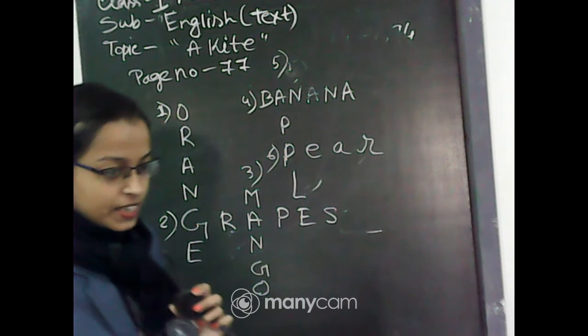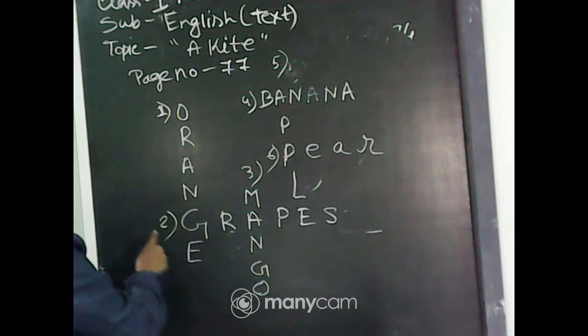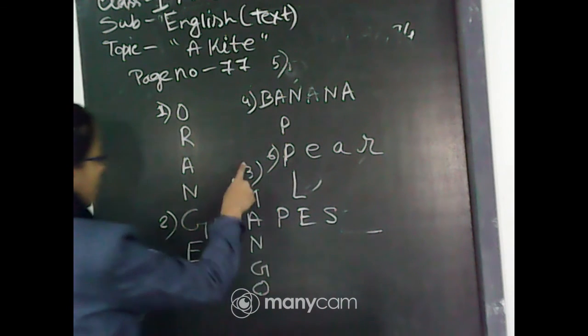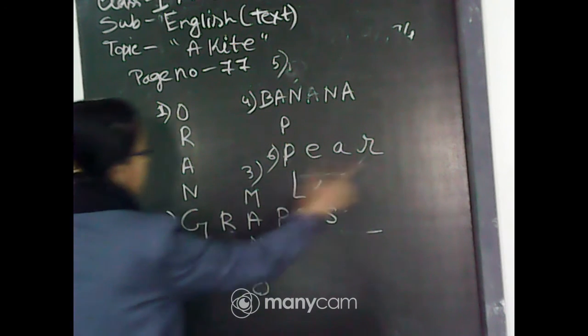So, completed. I have discussed this with you. Number 1: orange. Number 2: grapes. Number 3: mango. Number 4: banana. Number 5: apple. Number 6: pear.